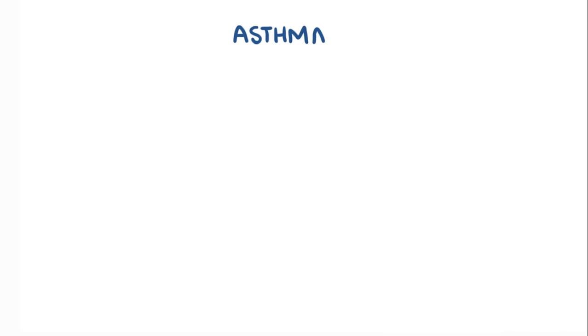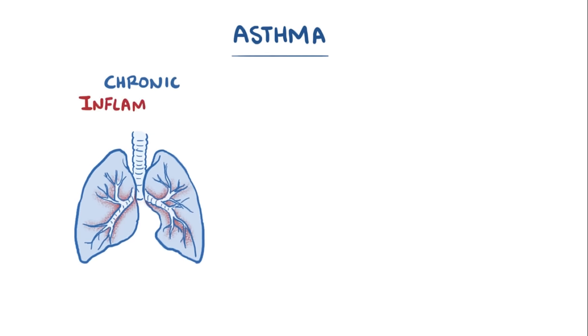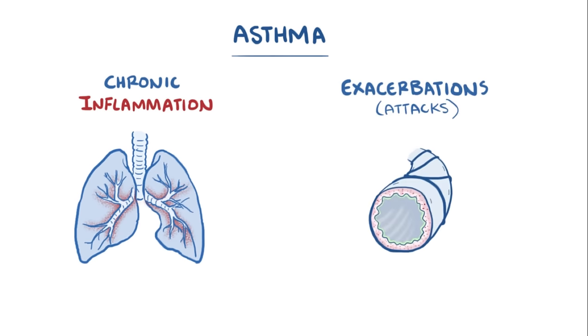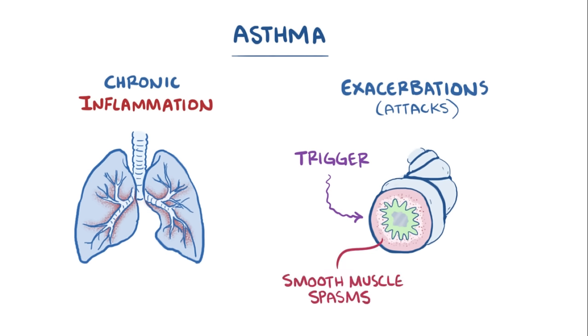As a quick recap, asthma is characterized by chronic inflammation in the lungs as well as asthma exacerbations or attacks, where certain triggers start up more inflammation which leads to smooth muscle spasms and mucus production, both of which make it hard to breathe.